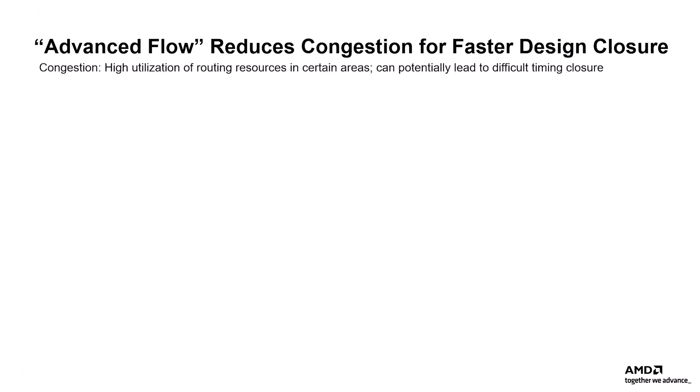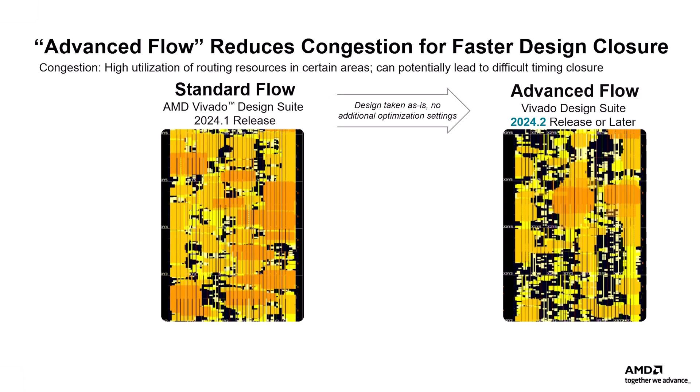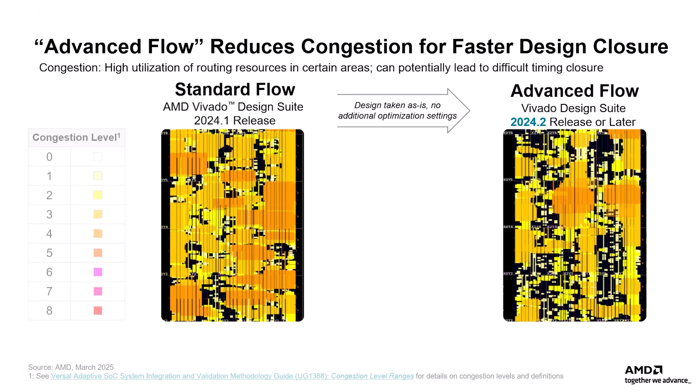This slide shows the impact of Advanced Flow on routing congestion. Congestion usually happens when physical regions have high pin density and high utilization of routing resources. It can potentially lead to difficult timing closure if critical paths are placed inside or next to a congested area, or if device utilization is high and the placed design is difficult to route, which will significantly increase router runtime. Here we have taken the same design and ran it on Vivado 2024.1 with standard flow on the left, and Vivado 2024.2 with advanced flow on the right, with the exact same strategy applied and no optimization on both sides. This congestion is measured by Vivado and shown in terms of levels, with 8 being a very highly congested area — almost impossible to fix — and 0 meaning very little congestion. Usually anything beyond level 5 is harder to fix. With this understanding, if you look at the two graphics, the advanced flow does better placement and gives less congestion overall.